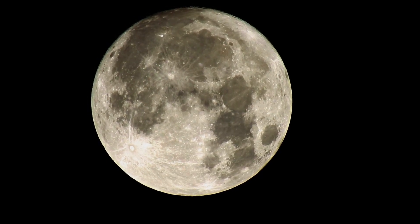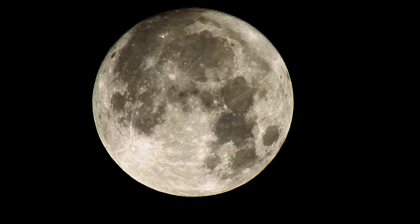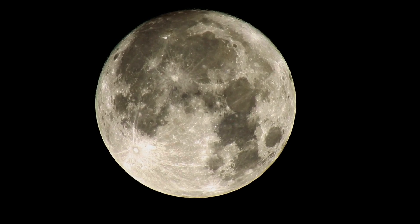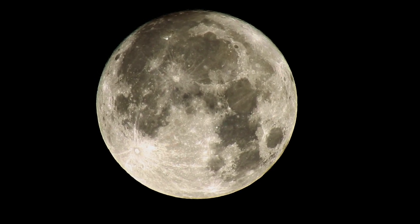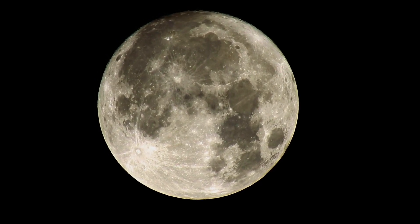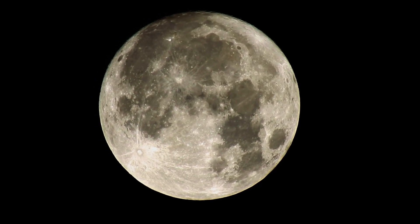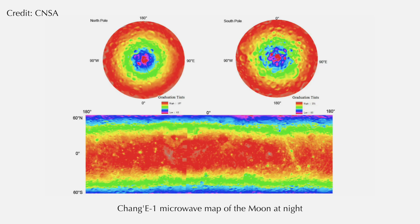From large dishes on Earth out into space, the moon and rocky planets have been scanned using microwaves. The reflections of those microwaves have told us how far away these bodies are and even given us images of their surfaces.